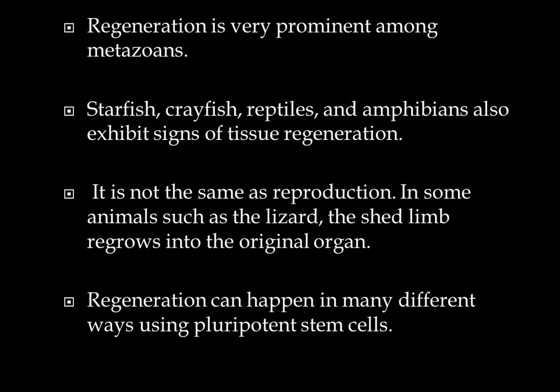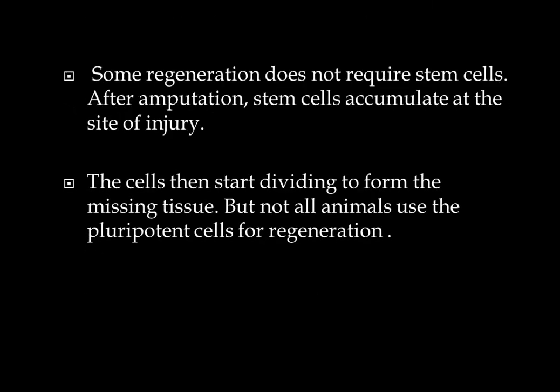Regeneration is not the same as reproduction, which is different in higher animals. In some animals such as lizards, the shed limb regrows into an original organ. Regeneration can happen in many different ways using pluripotent stem cells, though some regenerations do not require stem cells. After amputation, the stem cells accumulate at the site of injury and then start dividing to form the missing tissue. Not all animals use pluripotent cells for regeneration, and there are actually four types of regeneration processes in animals.